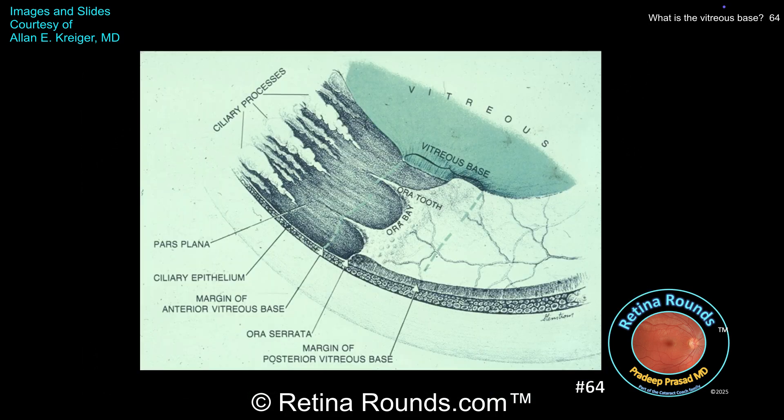First, we'll start with some basic anatomy of the anterior retina. In this image, from left to right, we have the ciliary processes, followed by the pars plana and ciliary epithelium.